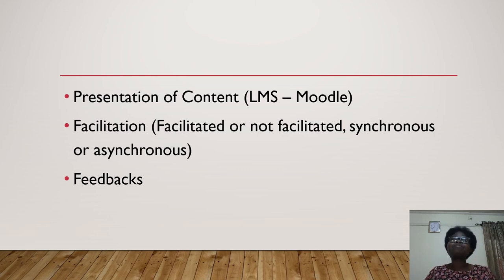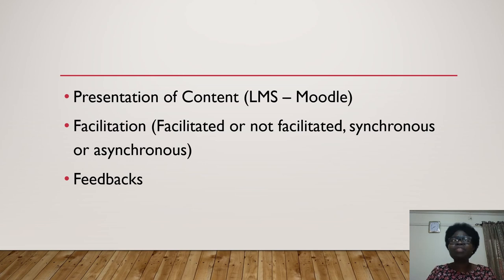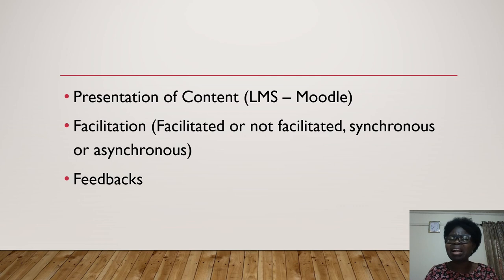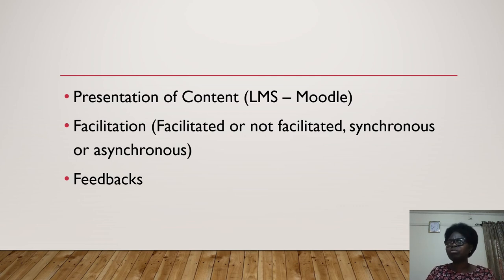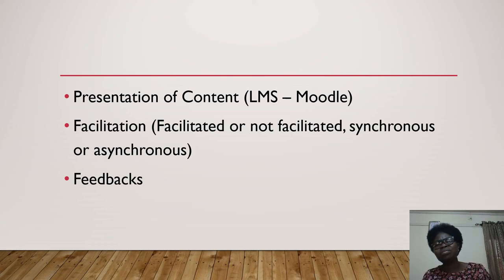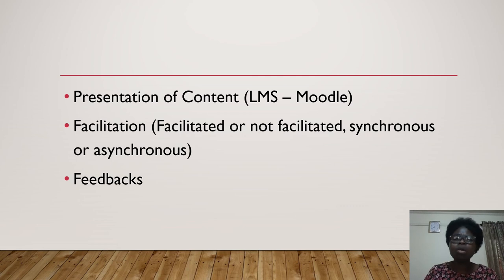What we do at the feedback stage matters a lot. For example, if you requested one, two, three points and the student deviated, simply writing 'out of point — where were you in class?' can kill the student's morale. You must state whatever you want to say positively. Once that is done, you will be able to achieve what you need to achieve.